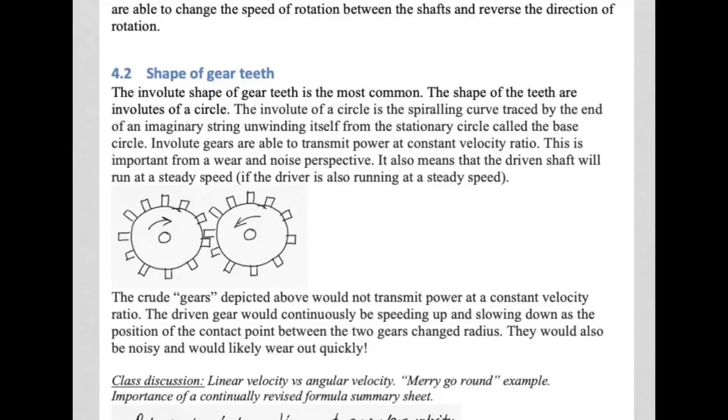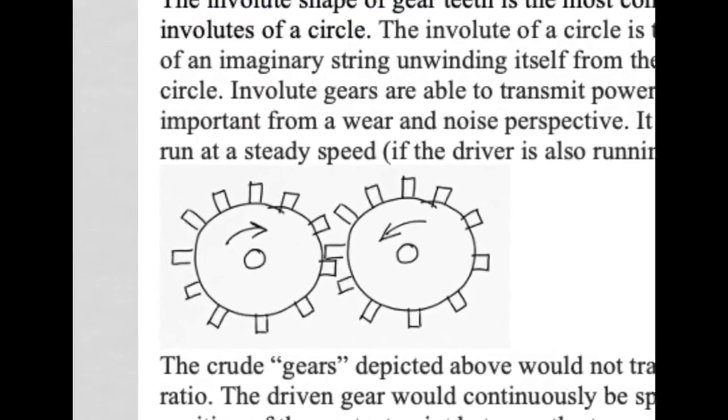The shape of gear teeth are in fact involutes of a circle. Involute gears are able to transmit power at what is known as constant velocity ratio. This is very important from a wear and noise perspective, and it also means that the driven shaft will run at a steady speed if the driver is running at a steady speed.